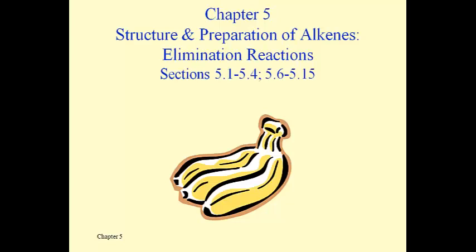In this chapter we meet a new class of compounds called alkenes. The 'ene' at the end of the word alkene means that this class of compounds has double bonds between two of its carbons. Up until now we've seen 'ane' as a suffix, which means that all the carbon-carbon bonds are single bonds, but it's very common to encounter double bonds as well.